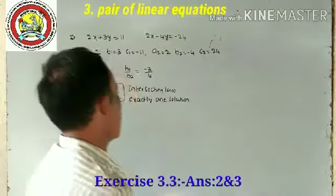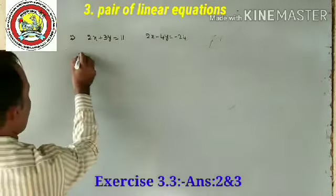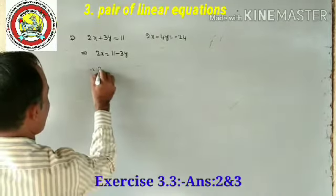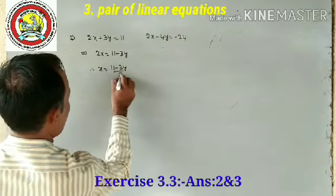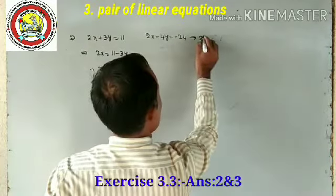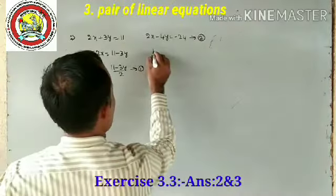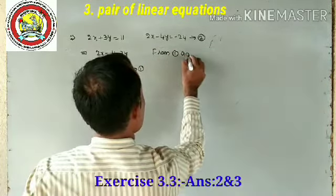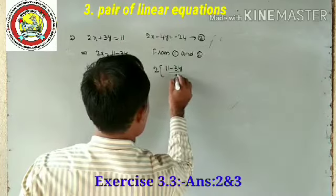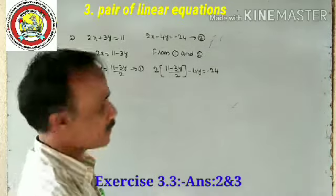Now find the values of x and y. From equation 1, x is equal to (11 - 3y) / 2 — call this equation 1. The given equation is already in the form a1x + b1y + c = 0 — call it equation 2.